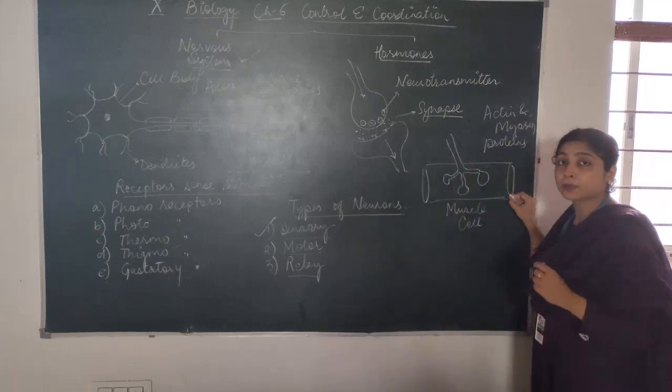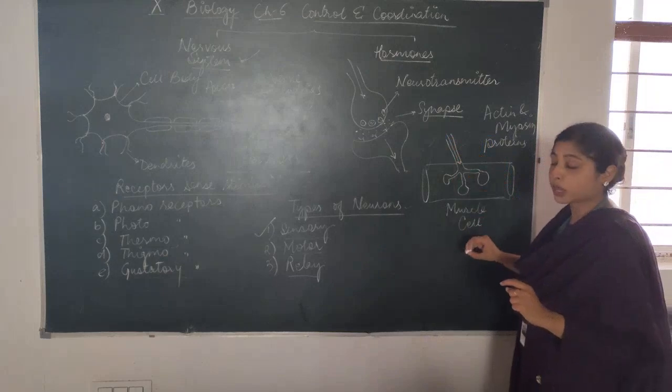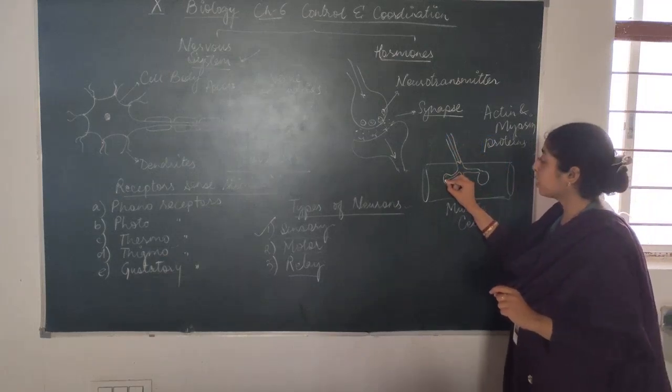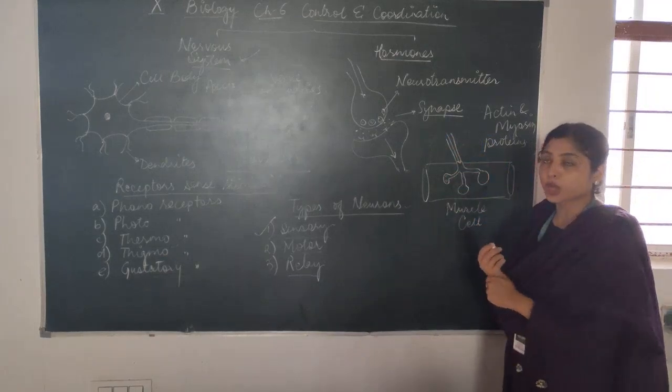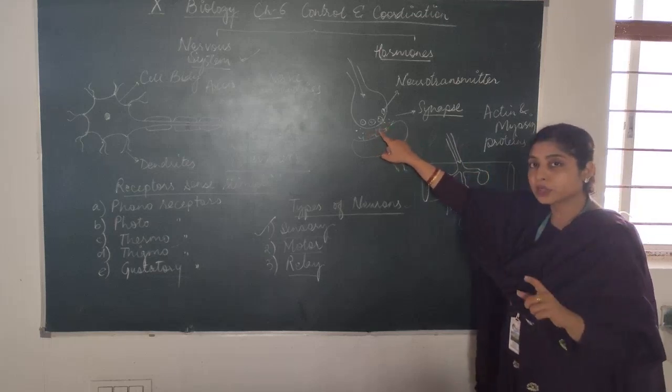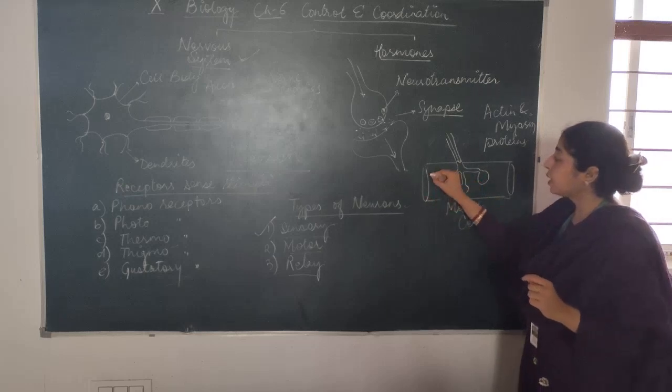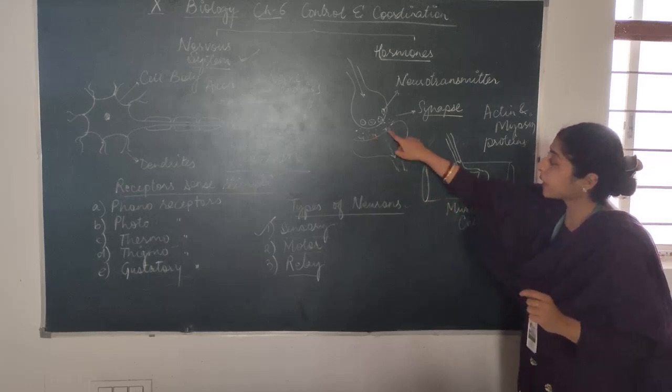Here is a muscle cell. When the signal comes from the neurons, the nerve ending reaches the muscle. Here the vesicles burst and the neurotransmitter will be released into the synapse.